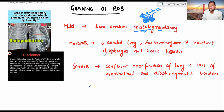In moderate form, there is under-aerated lung and we have air bronchogram. There is also indistinct diaphragm and heart border.